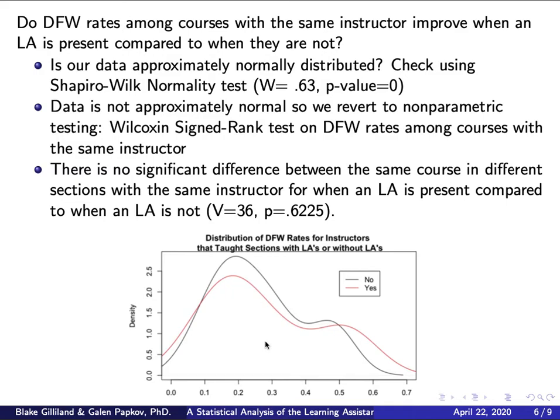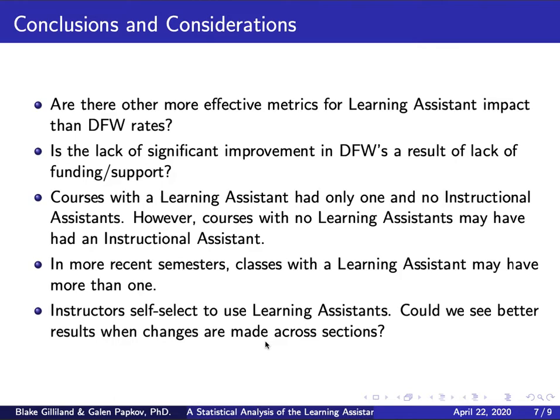Again, a similar result — we cannot conclude there is a significant difference, and the DFW rate for LA courses is not lower. The distributions for the two groups are eerily similar: both bimodal, with a similar shape. No significant difference there either.